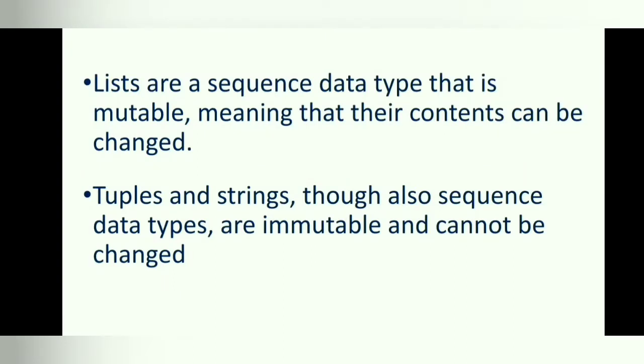Lists are sequence data types that are mutable, meaning that their contents can be changed. Tuples and strings, though also sequence data types, are immutable and cannot be changed.